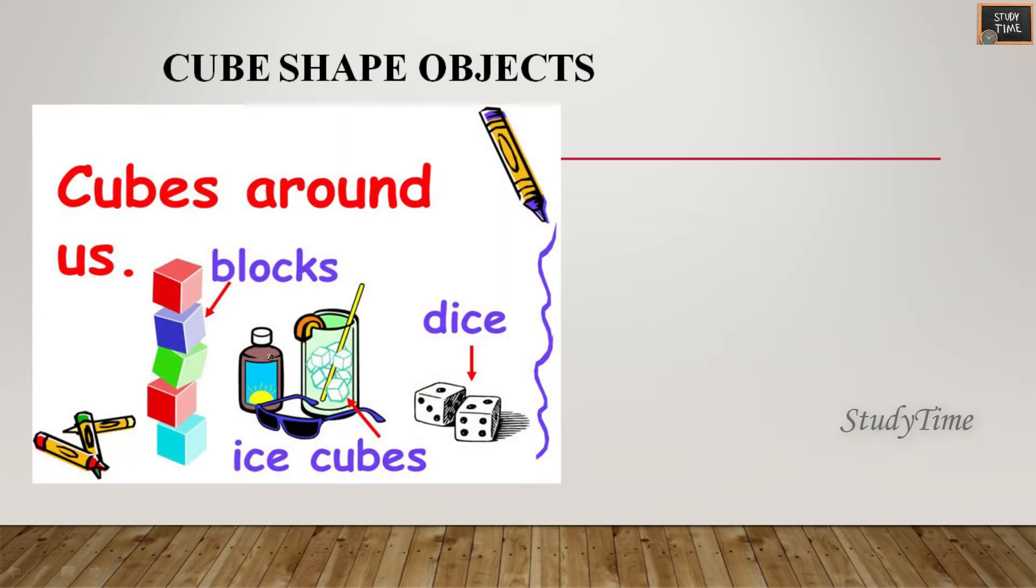Cube shaped objects - you can see blocks, ice cubes, dies - all these are cube shaped objects.